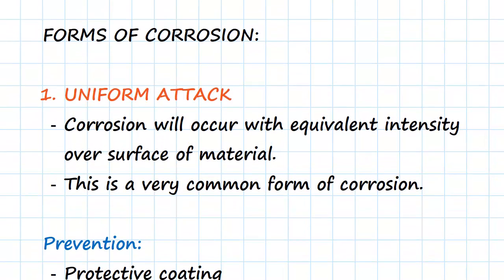So for our forms of corrosion, the first one we're going to have a look at is the most common, and it's called a uniform attack. And this just means, as you can guess from the name, that corrosion will occur with equivalent intensity over the surface of a material. So it will occur uniformly throughout the surface of that material.